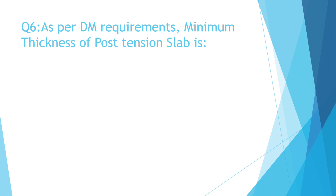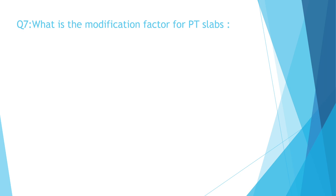Question Number 6: As per BRDM requirements, the minimum thickness of a post-tension slab is: A. 100mm, B. 150mm, C. 200mm, D. 250mm. The correct answer is C. 200mm.